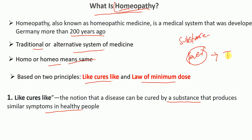So in the fever example, the body temperature is high, and the substance used for treatment is one that produces heat in the body. This illustrates 'like cures like': a disease is cured by a substance that produces similar symptoms in healthy people.